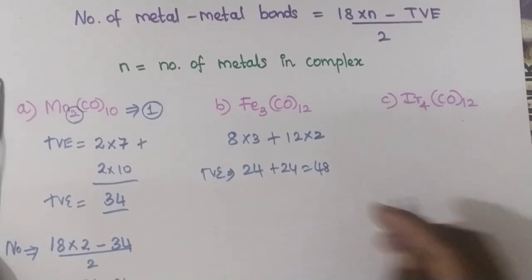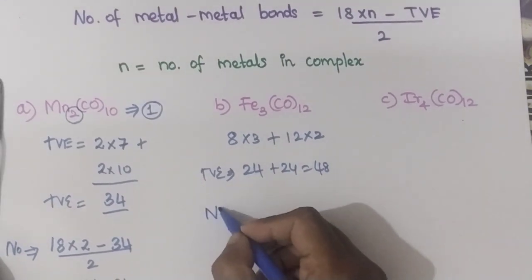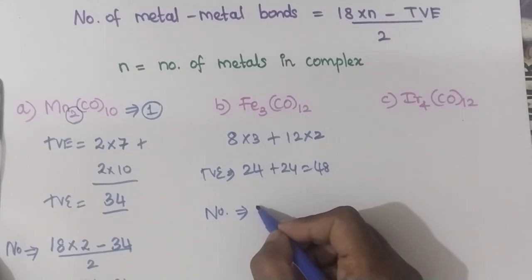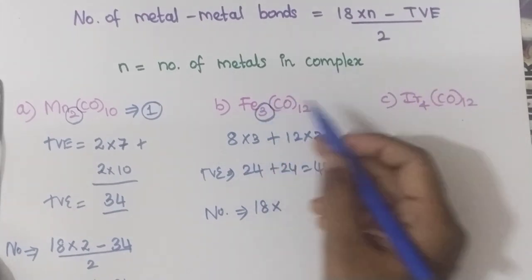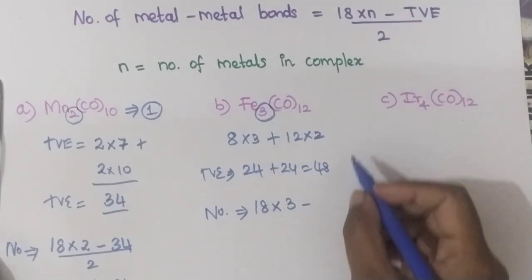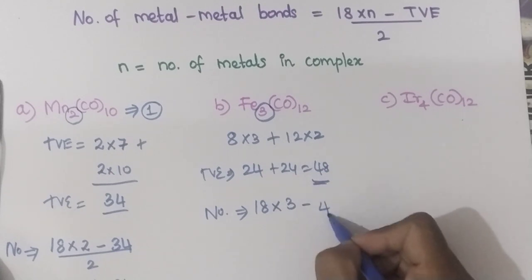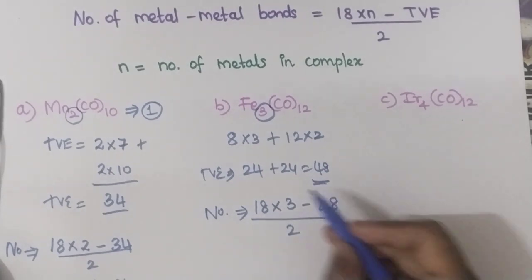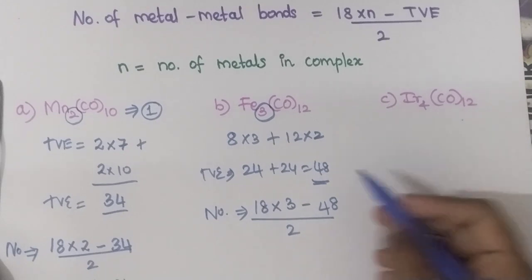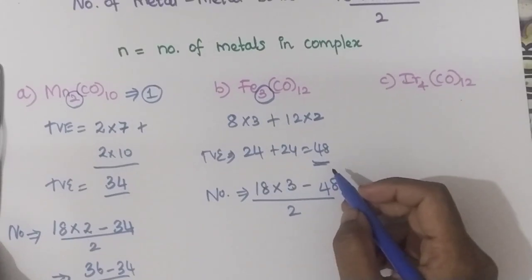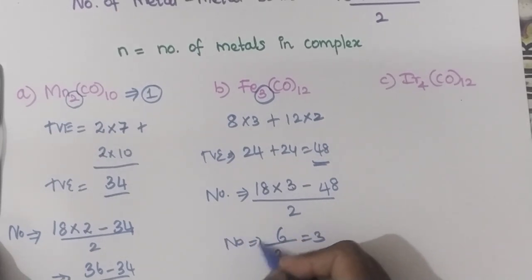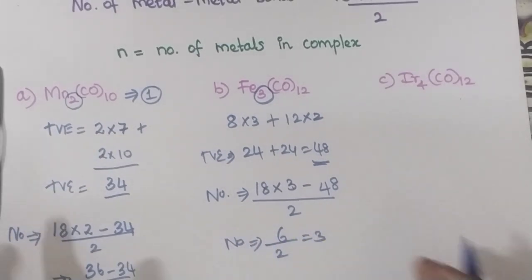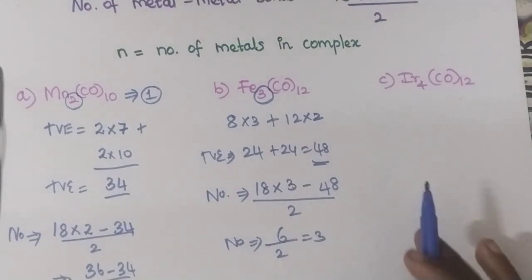Now, find the number of metal-metal bonds. The formula is 18 × N minus total valence electron, divided by 2. N is 3 here — 3 metal atoms are present. So: (18 × 3 − 48) / 2 = (54 − 48) / 2 = 6 / 2 = 3. The number of metal-metal bonds in Fe₃CO₁₂ is 3.